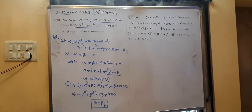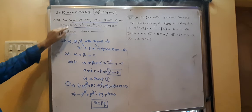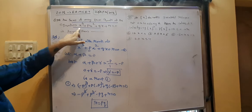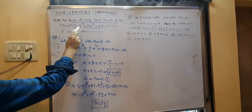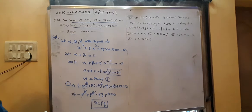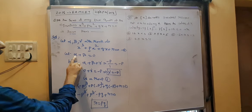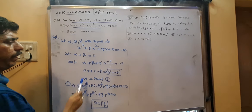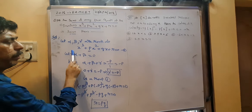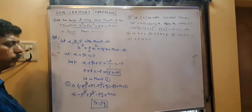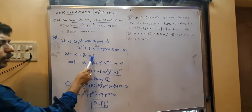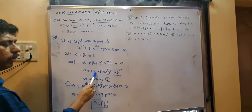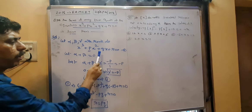Coming into the question: the sum of two roots of a cubic equation is zero. Out of three roots, sum of two roots is zero. I will take alpha plus beta equal to zero. The sum of three roots is minus b by a, which is minus p. Since alpha plus beta is zero, substituting gives gamma equal to minus p. This is the root of the equation.